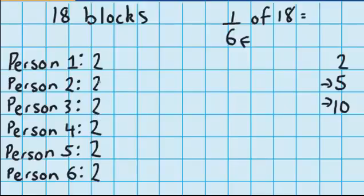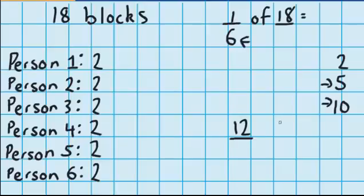Now let's work out how much we've given out so far. 2 plus 2 is 4, 4 plus 2 is 6, 6 plus 2 is 8, 8 plus 2 is 10, 10 plus 2 is 12. So I've shared out 12 but I need to share out 18. That means I must have 6 more blocks to share out, and I know that because 12 plus 6 equals 18.